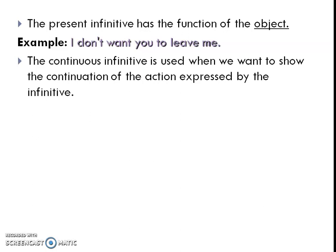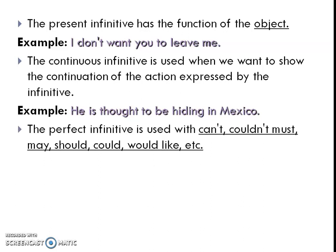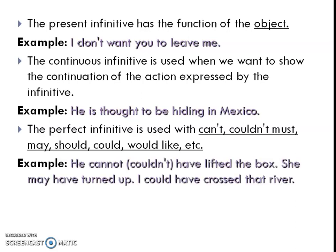The continuous infinitive is used when we want to show the continuation of an action: 'He is thought to be hiding in Mexico.' The perfect infinitive is used with modal verbs like can't, could not, must, may, should, could, would, etc. Examples: 'He cannot have lifted the box'; 'She may have turned up'; 'I could have crossed that river.'